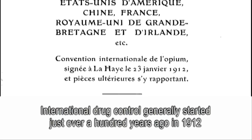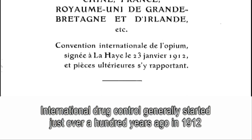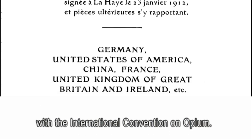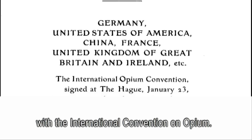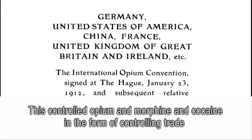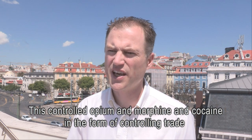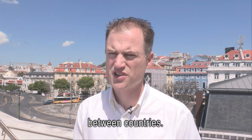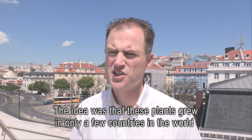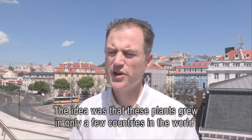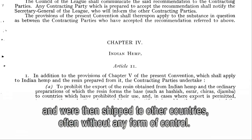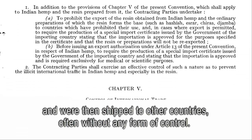International drug control generally started just over 100 years ago in 1912 with the International Convention on Opium. This controlled opium, morphine, and cocaine in the form of controlling trade between countries. The idea was that these plants grew in only a few countries in the world and were then shipped to other countries, often without any form of control.